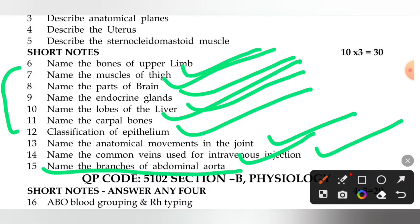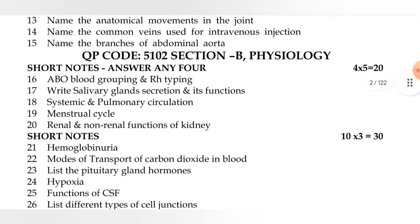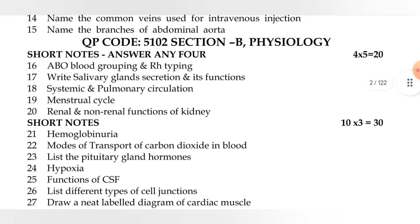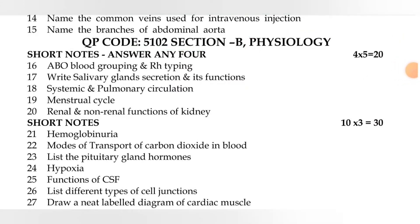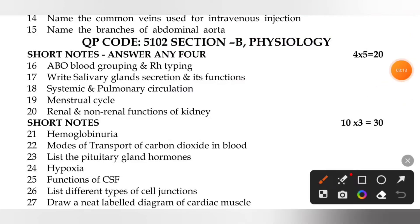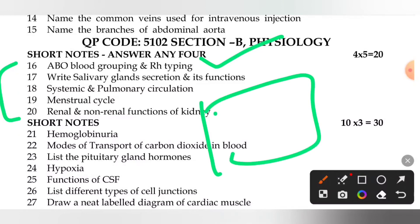Next, Section B — Physiology. Here you have 50 marks. We can identify 5 marks questions, and the section covers key physiological topics worth 50 marks total.